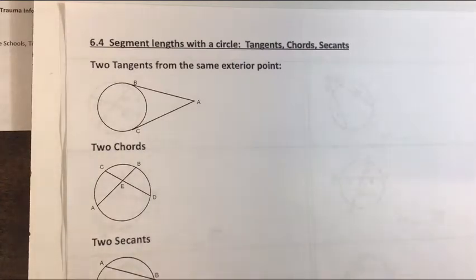In this lesson for day 6.4 we're going to take a look at the relationships created with segment lengths within a circle. Remember that we have different segments when it comes to circles called tangents, chords, and secants. In the previous lesson we looked at when angles and arcs are created by these intersecting lines or segments. Well now we're going to look at the segment length relationship.